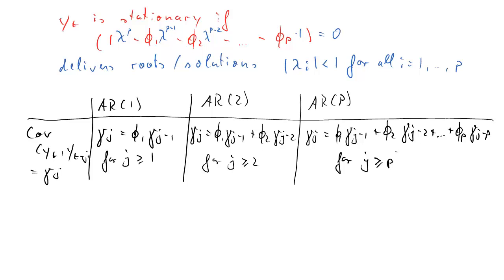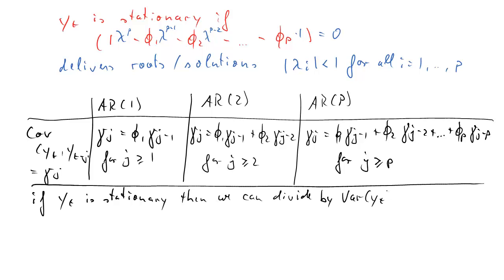That's for all j over p. So again, AR(1) and AR(2) are just a special case of the AR(p). Now, if y_t is stationary, then we can divide these covariances by the variance, which we'll also call gamma_0, and what we'll obtain are the relevant relationships between the autocorrelations rather than the covariances.